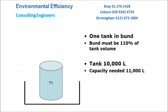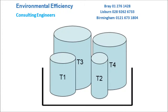Bunds have to have sufficient capacity to contain the volume likely to be released in an instant. For a single tank, the general rule is that the bund must contain 110% of the tank volume. Where there is more than one tank in the bund, the general rule is more complex and this will be covered in a later video.